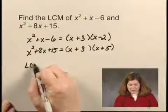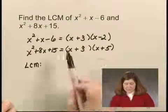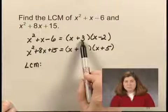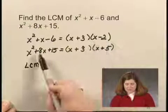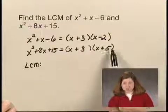Once we've factored, we can form the least common multiple using the factors. The factors of x squared plus x minus 6 are x plus 3 and x minus 2. The factors of x squared plus 8x plus 15 are x plus 3 and x plus 5.